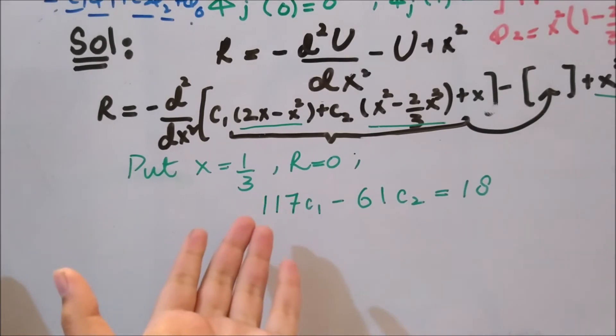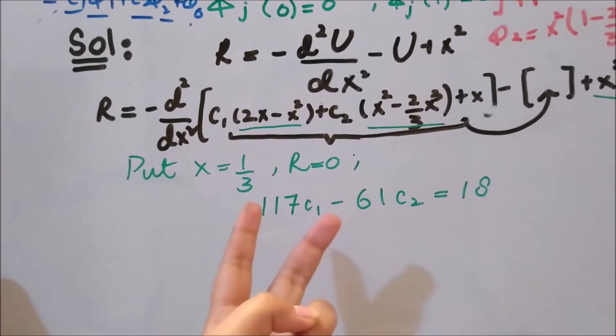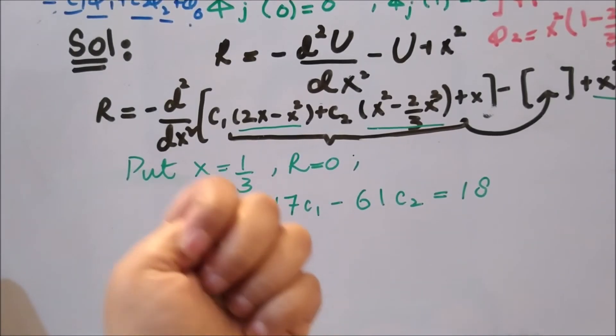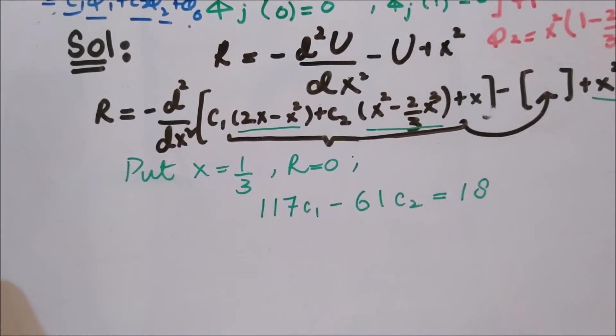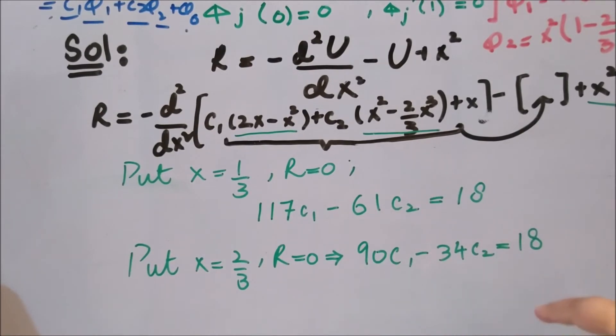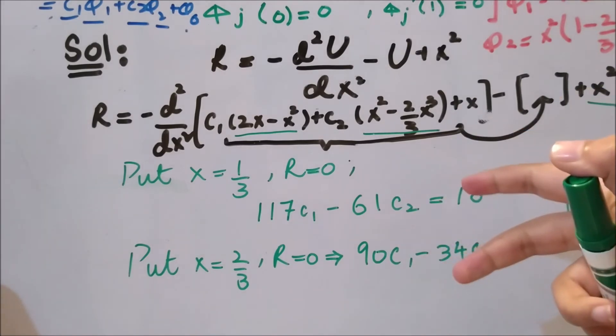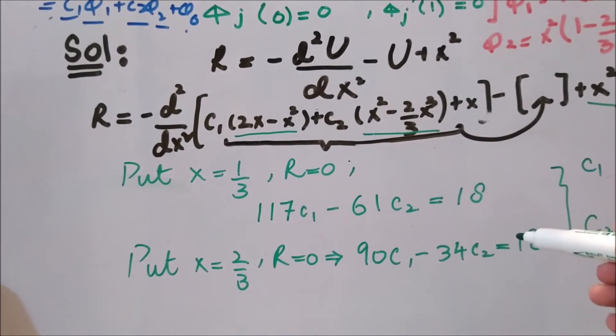By plugging the second collocation point that was two-thirds, you will end up with 90c1 minus 34c2 equal to 18. Now we are on the same edge where we have two equations, we have two variables. We know how we can solve these two equations and then we can end up with some value for c1 and some value for c2.